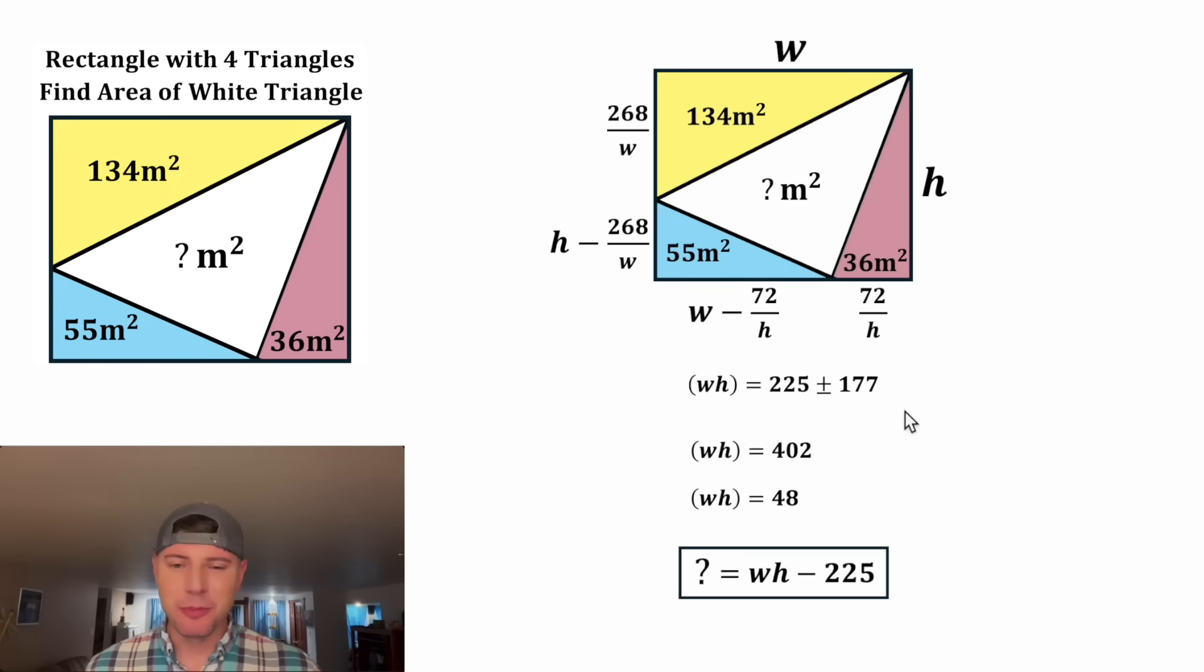The 402 seems reasonable, but 48 is definitely too small. There's no way the area of the entire rectangle is less than the sum of the three triangles. So this 48 answer is not valid.